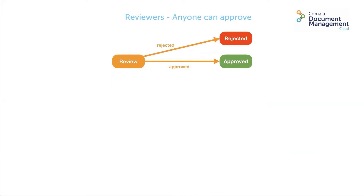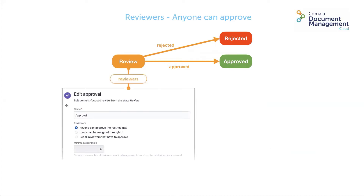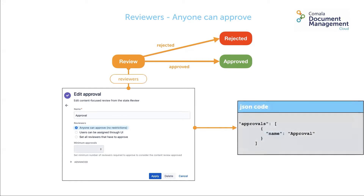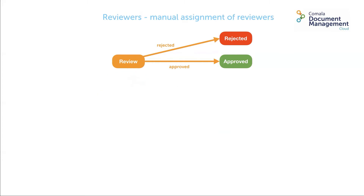Let's look at Anyone Can Approve. It simply adds the Approve and Reject buttons to the workflow pop-up, and anyone with edit and view permission can undertake the approval. A single decision transitions the content. This is displayed in the JSON code as simply the name of the approval.